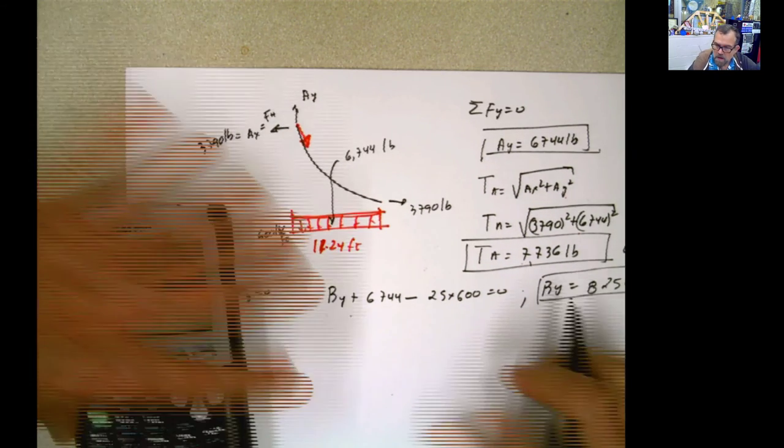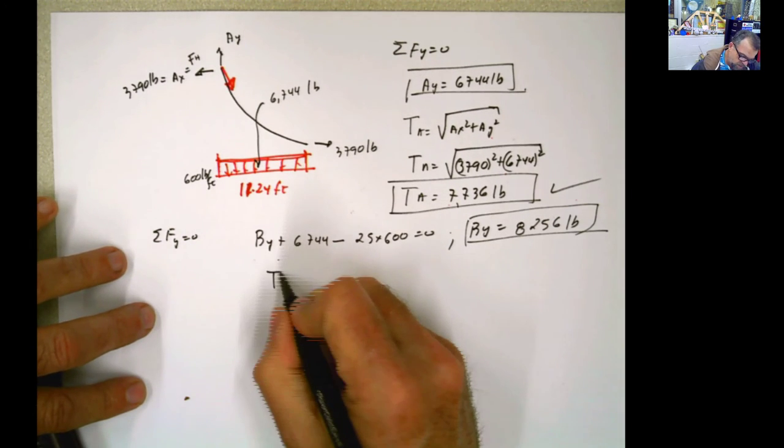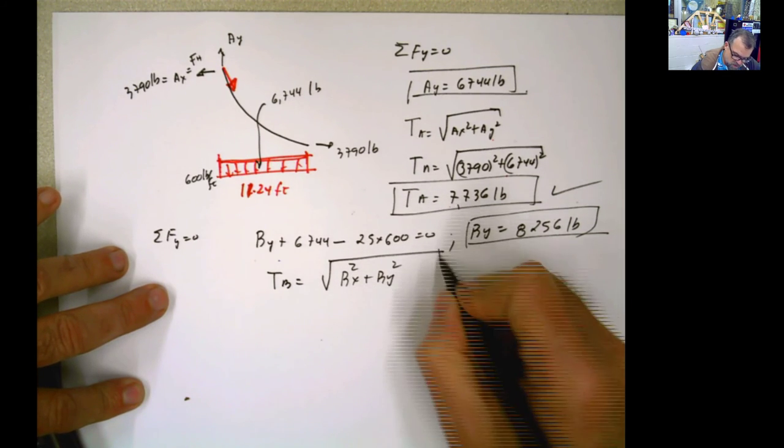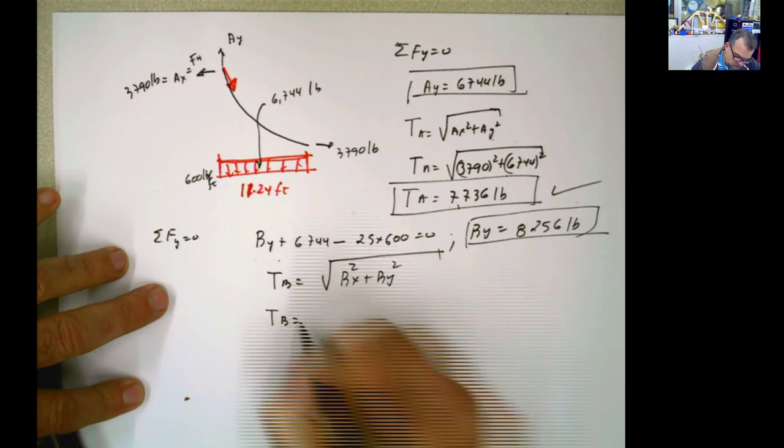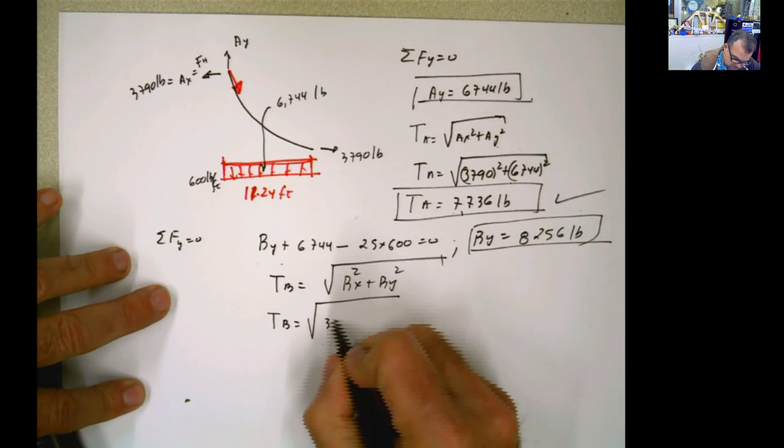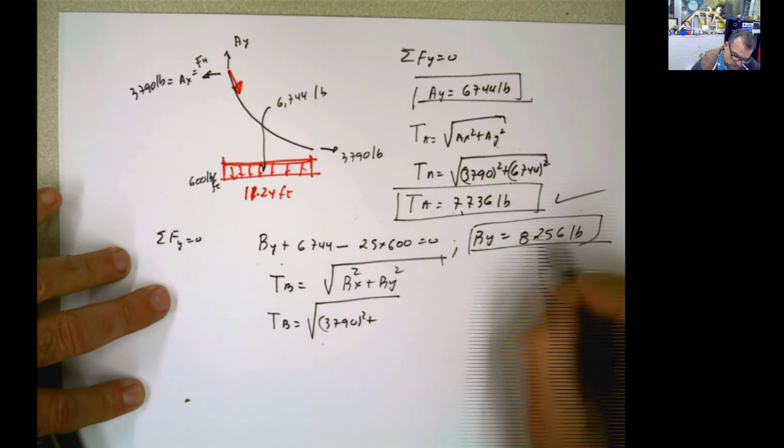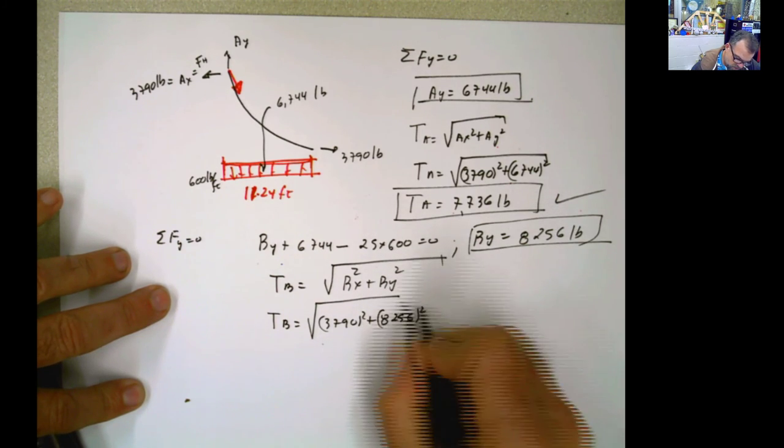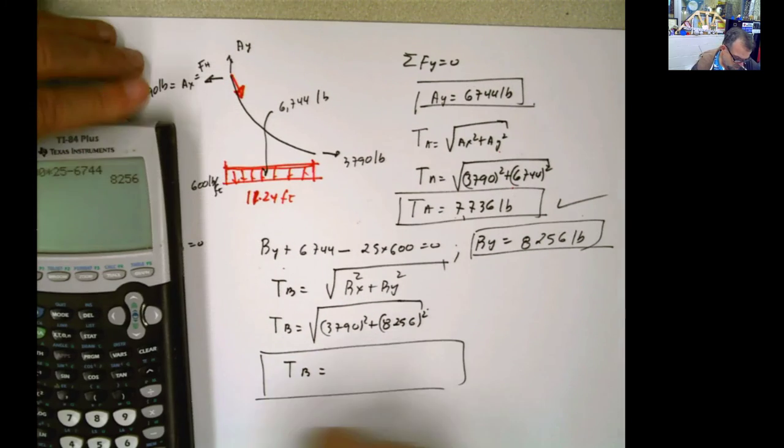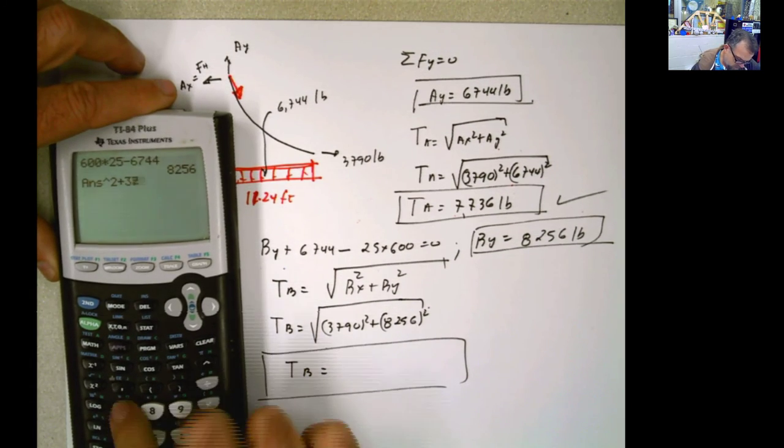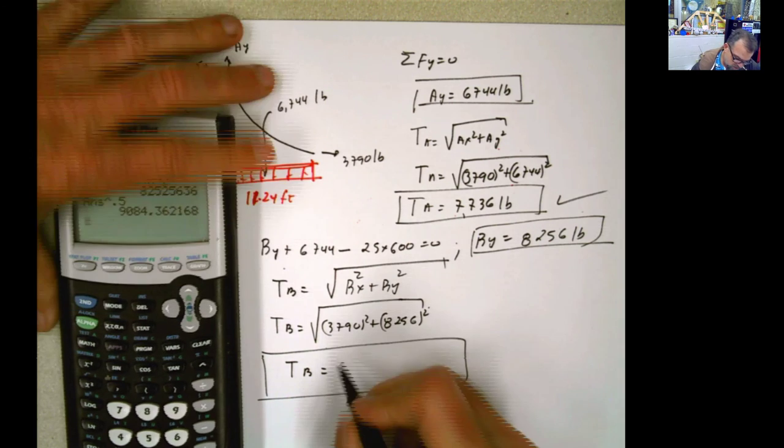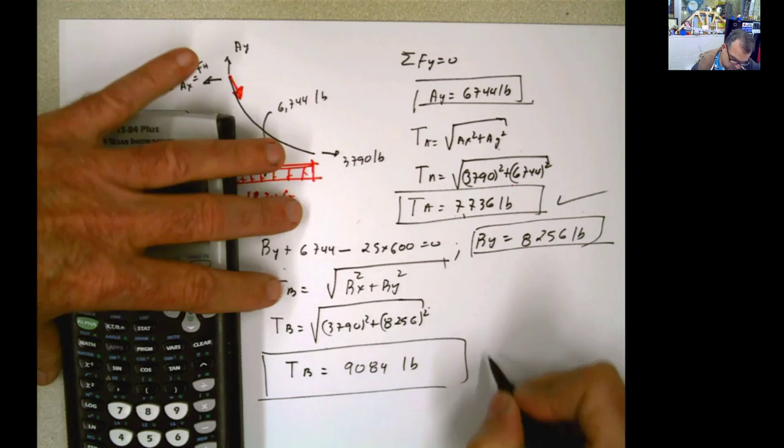OK, and now what do we do? Tension at B, square root of Bx² plus By². So tension at B equals square root of tension at Bx is the same, 3,790² plus By, 8,256². Tension at B equals square root, 9,084 pounds. Done.